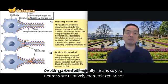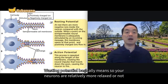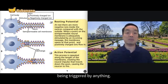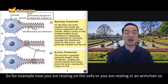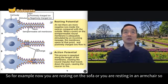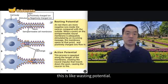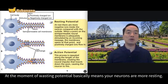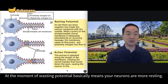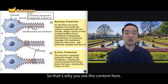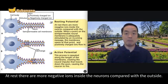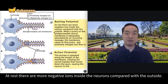Resting potential basically means your neurons are relatively more relaxed, not being triggered by anything. For example, now you are resting on the sofa or in an armchair — this is like resting potential. At the moment of resting potential, your neurons are more resting. At rest, there are more negative ions inside the neurons compared with the outside.